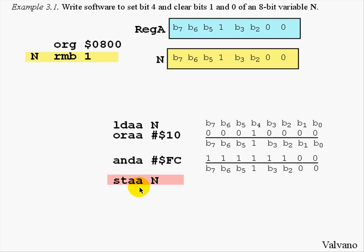The last instruction in this sequence will be to store the result, which was temporarily calculated in register A, back into variable N. Notice the result of these four instructions is to set bit 4 and clear bits 0 and 1 as desired.